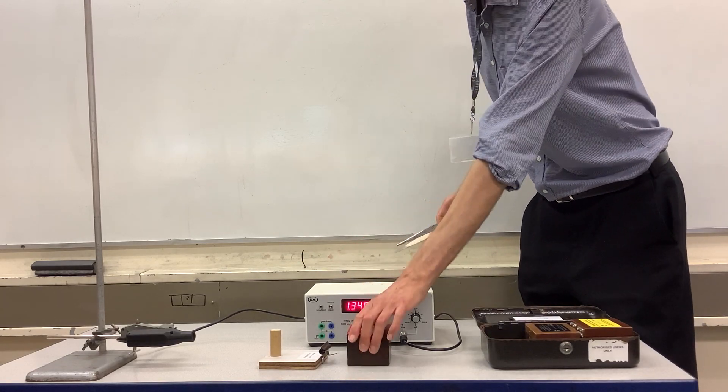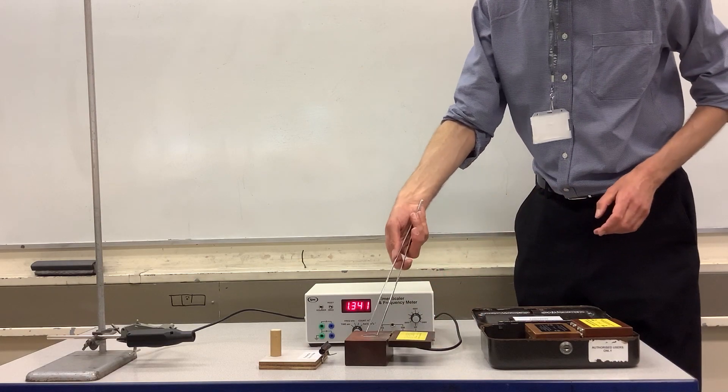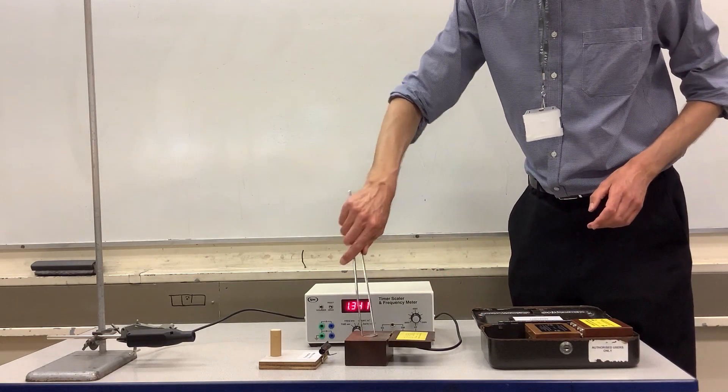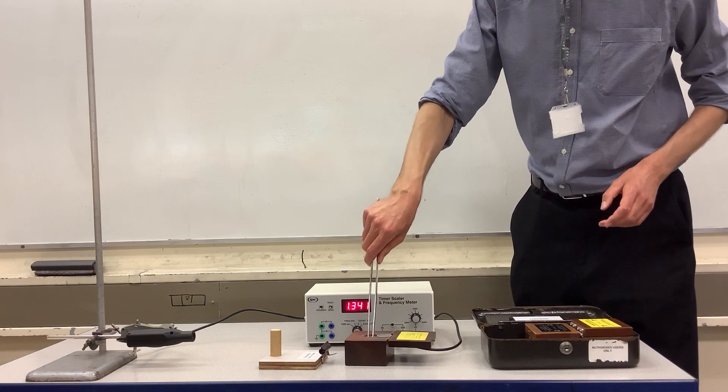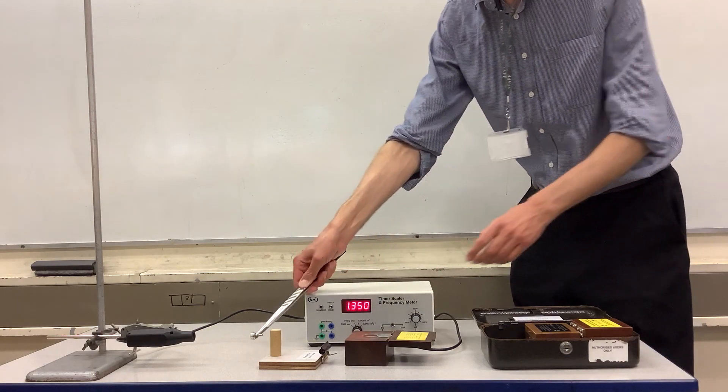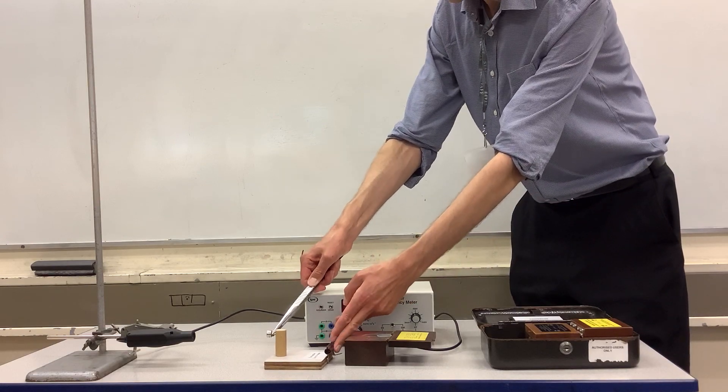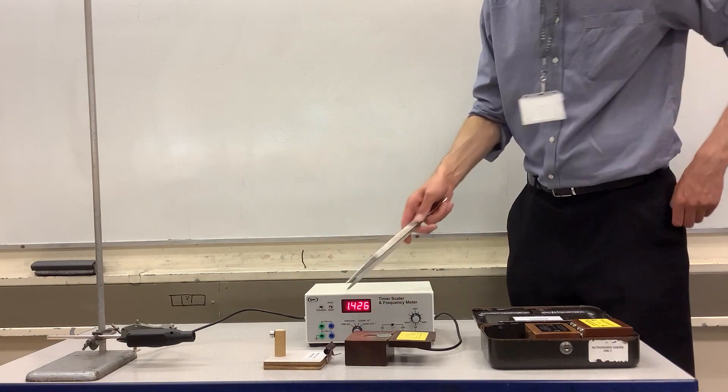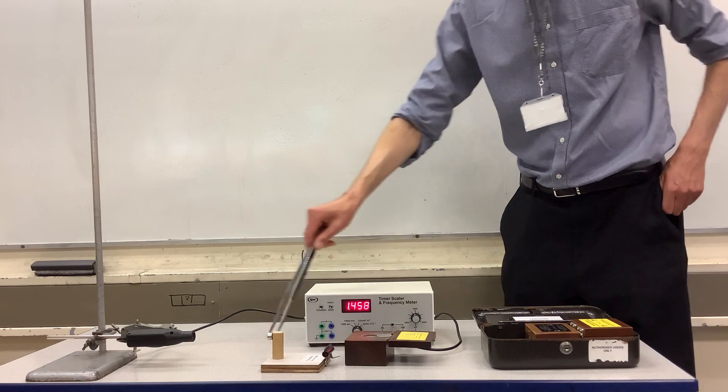So like before, the radioactive source is stored inside the lead-lined box, and I'm using the tongs to get it out to do so safely, and then I can put it in the holder.